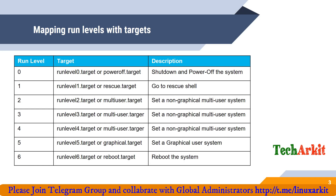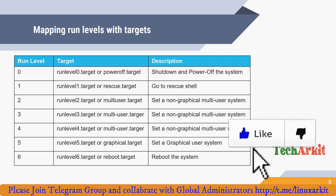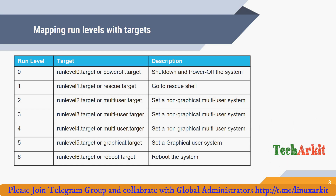Run level 0 target or poweroff target — these are the same as shutting down the machine or powering off the system. Run level 1 target or rescue target — if you'd like to boot into single-user mode, which was called rescue mode in previous versions, you can switch to rescue mode using run level 1 target or rescue target.